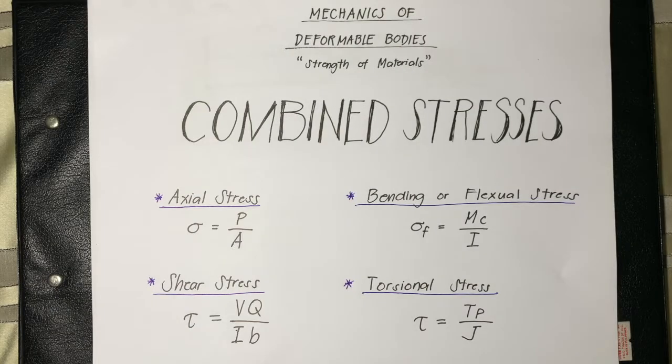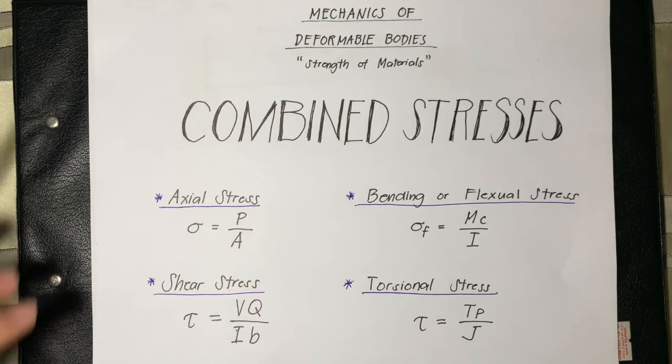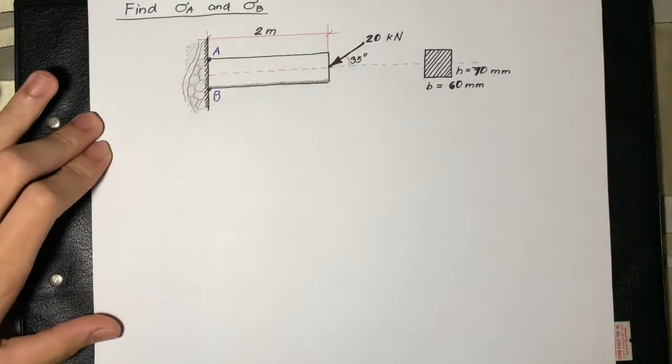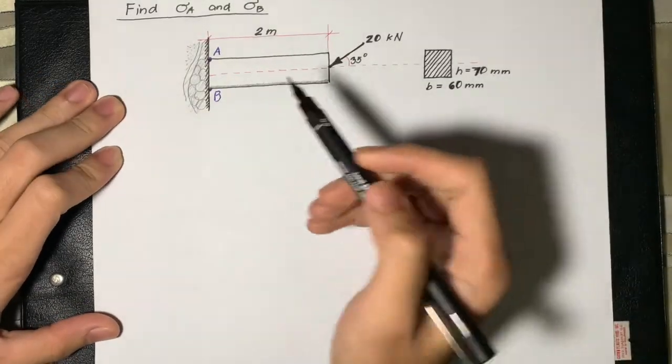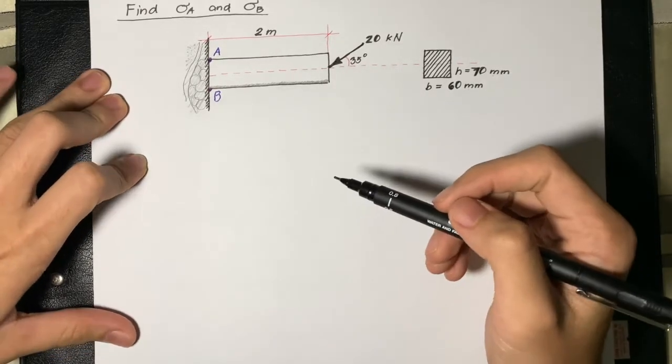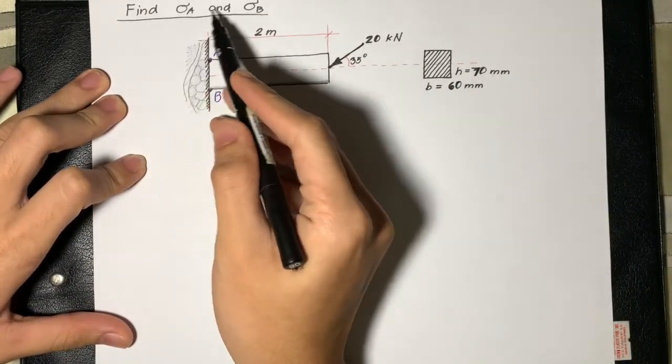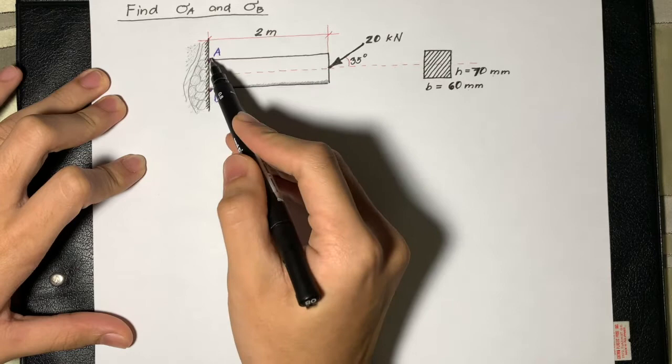We will now proceed in solving different combined stresses problems and here are the formulas we will use. First, we are given a cantilever beam and we need to find the stress at A and the stress at B.